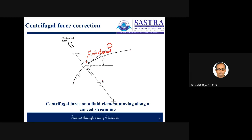The curved streamline has a radius of curvature r. The fluid element is experiencing a radial acceleration. That radial acceleration we consider in such a direction and we make it v square by r, where r is the radius of curvature and v is the velocity.